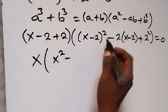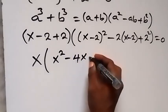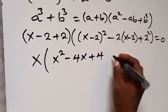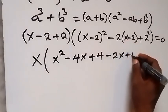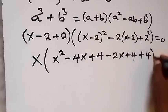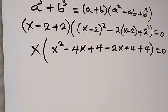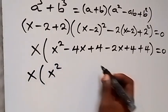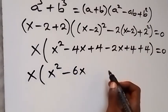Expanding the bracket: x² minus 2 times x times 2 gives minus 4x, then plus 2² that's 4, then minus 2x plus 4 equals to 0. Simplifying further, this gives us x times (x² minus 6x plus 12) = 0.